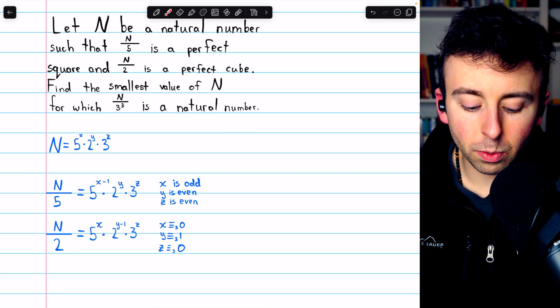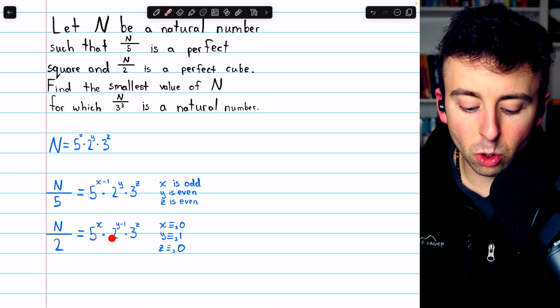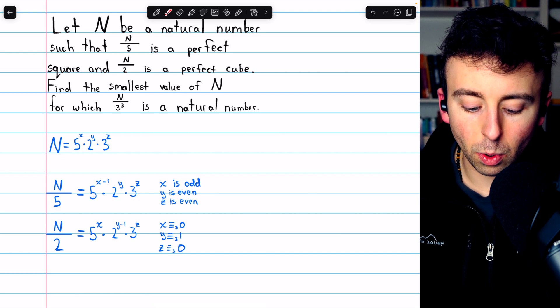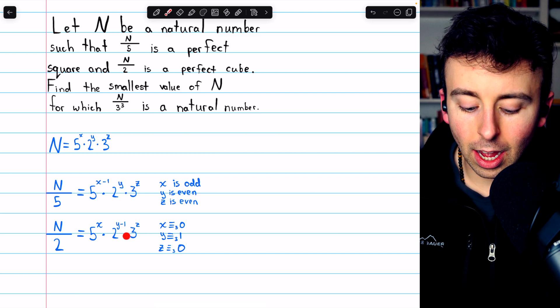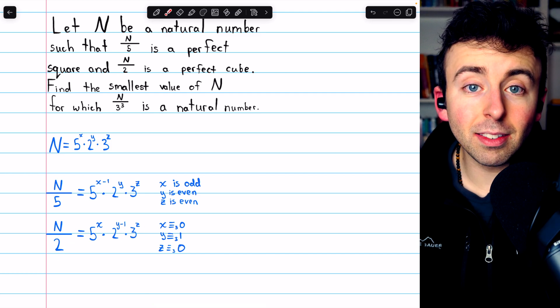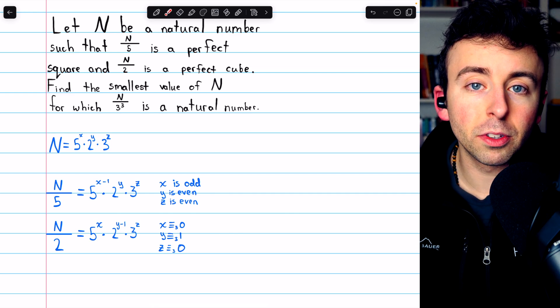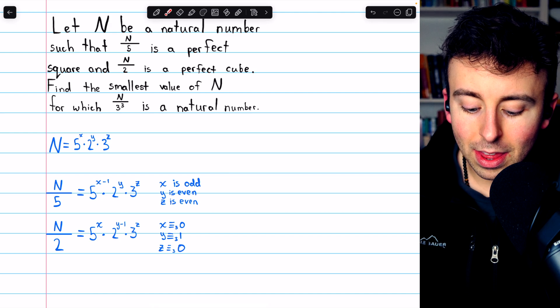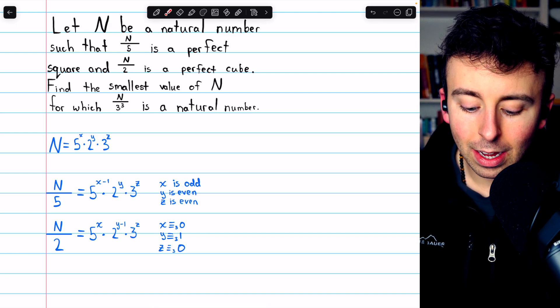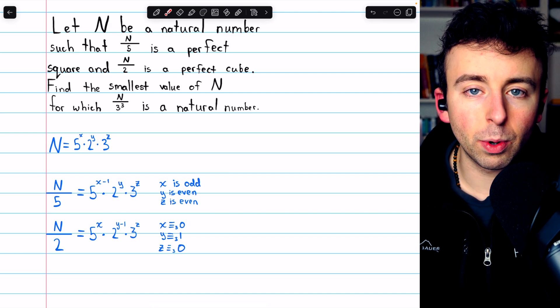So, we're thinking about N over 2, which is equal to 5 to the x times 2 to the y minus 1, y minus 1 because we've divided by 2, times 3 to the z. Again, this is a perfect cube, so all of these exponents must be multiples of 3. That means x, this power, is congruent to 0 mod 3. It's a multiple of 3.